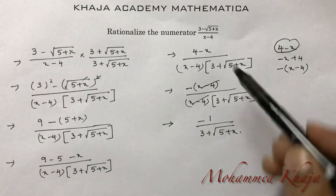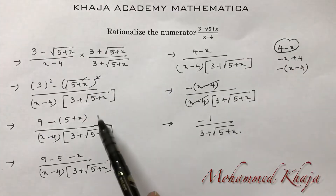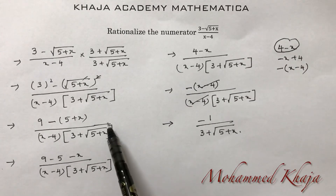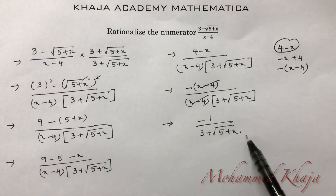So after rationalizing the numerator, the problem is complete. After simplification, the final answer is minus 1 over 3 plus root(5+x).